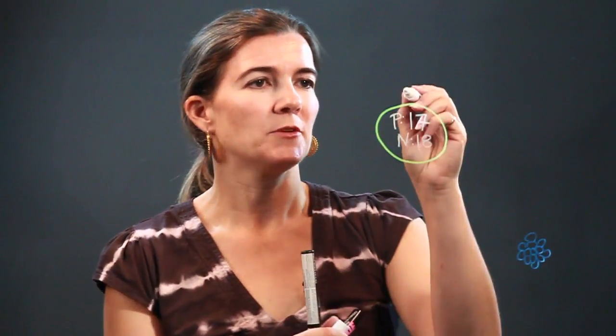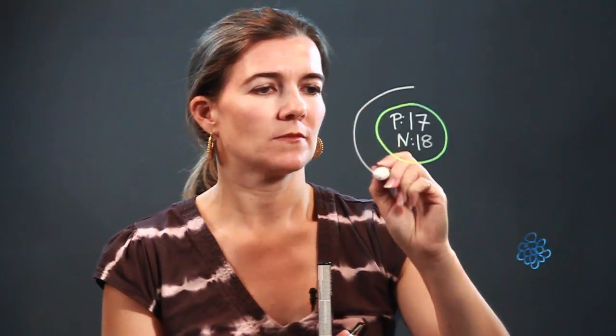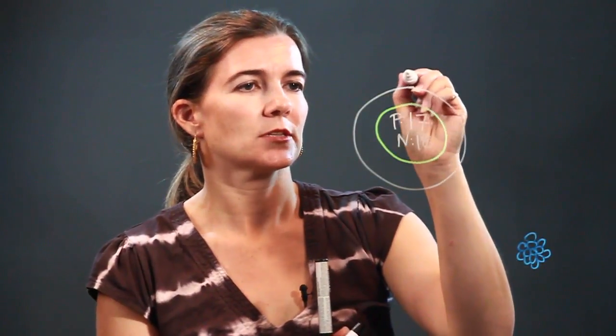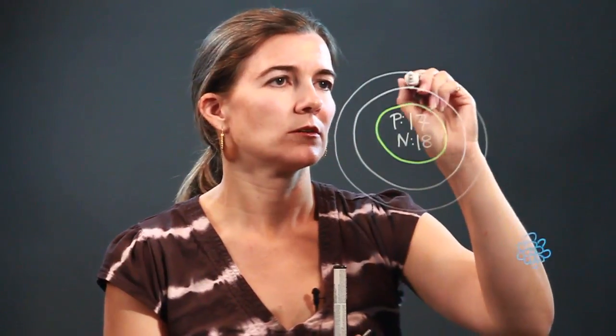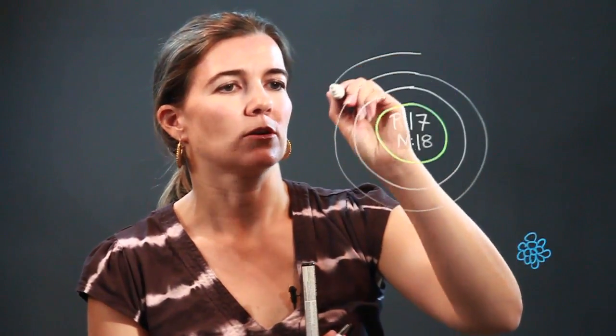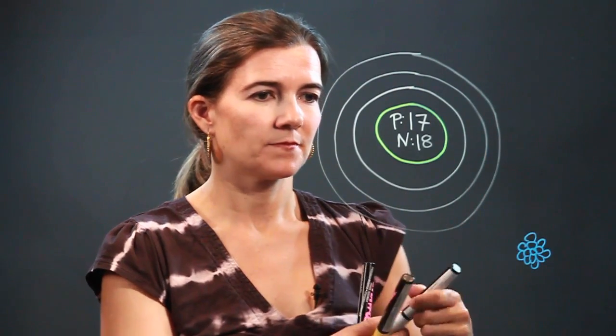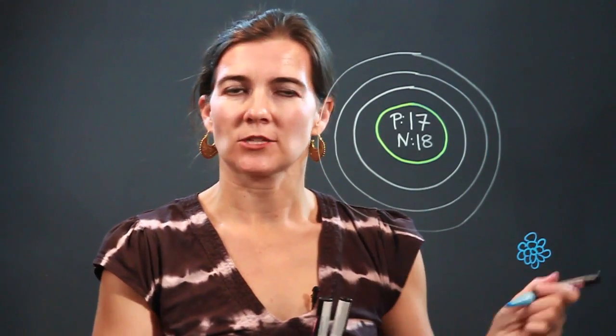All right, so moving right along, we have three energy levels, so draw three circles around your center circle and in here we have our electrons.